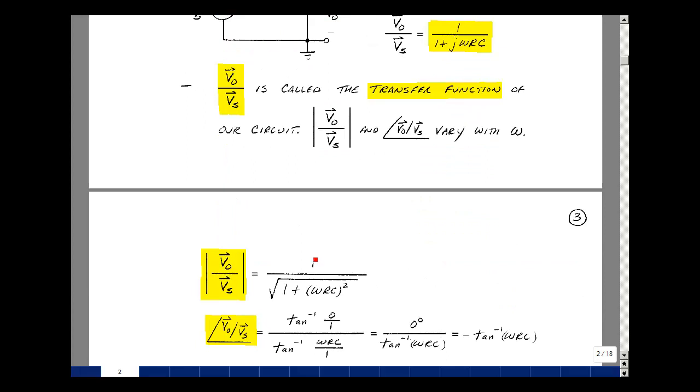Let's find the magnitude of our transfer function. The numerator is just equal to 1, so its magnitude is equal to 1, and the denominator is going to be the square root of the real part squared, which is 1 squared, and then the thing that multiplies j, which is ωRC.